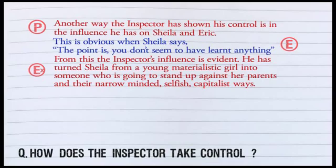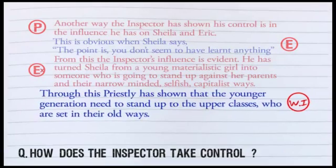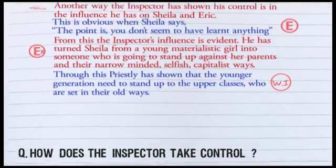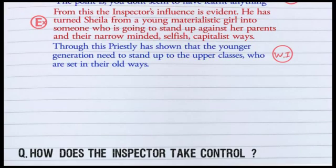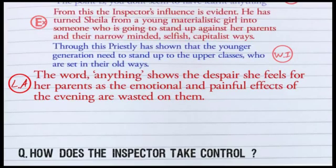Now I actually need to start adding in the writer's intention, and I keep developing the explanation. Through this, Priestley has shown that the younger generation need to stand up to the upper classes who are set in their old ways. This would be a universal message coming from both the young of the upper class and the young of the working class — it needs to be stood up to. Looking at language analysis, the word 'anything' shows the despair she feels for her parents, as the emotional and painful effects of the evening have been wasted on them.